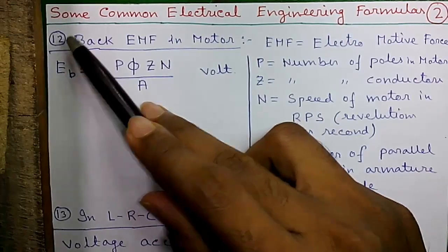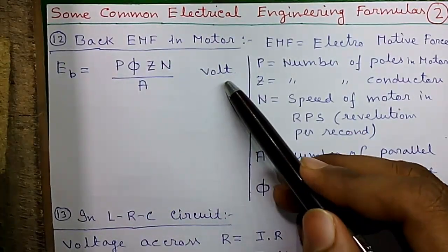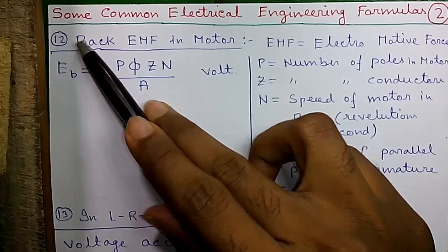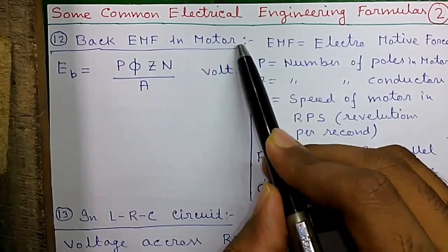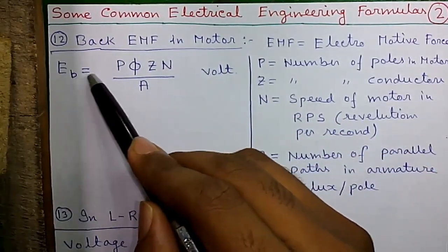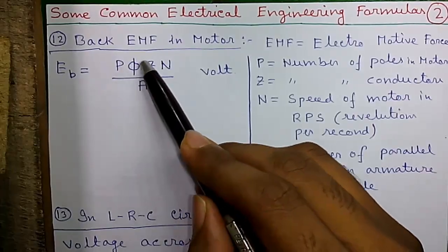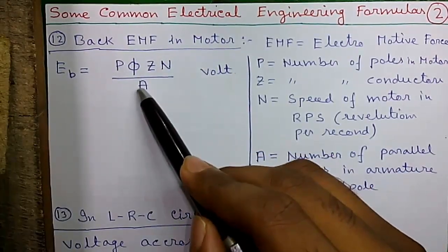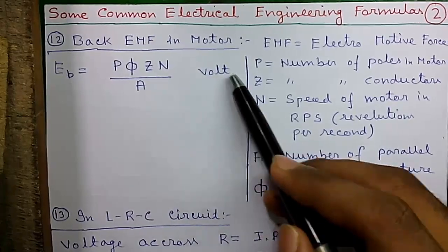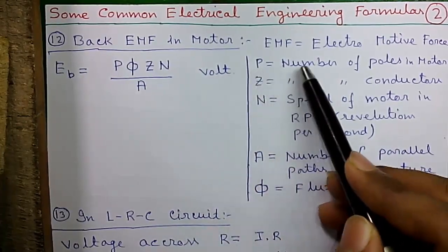So let's start. Formula number 12: Back EMF in a motor is given by E_b equals P into φ into Z into n divided by A volt, where P equals to number of poles in the motor.